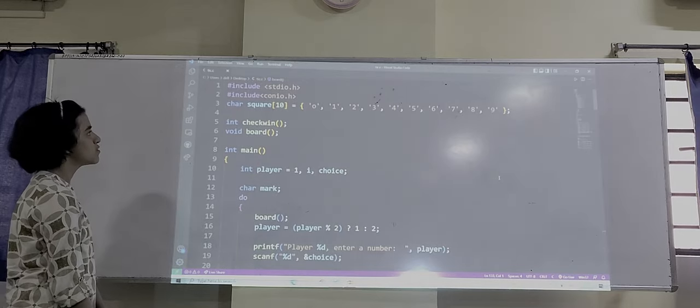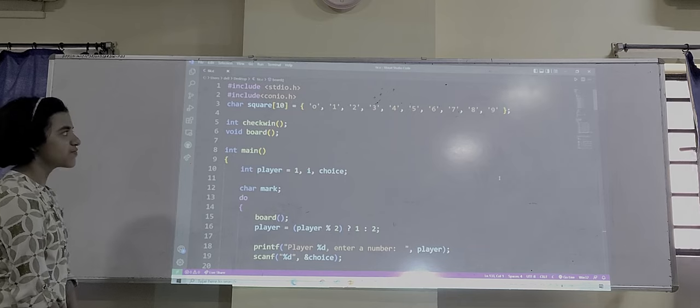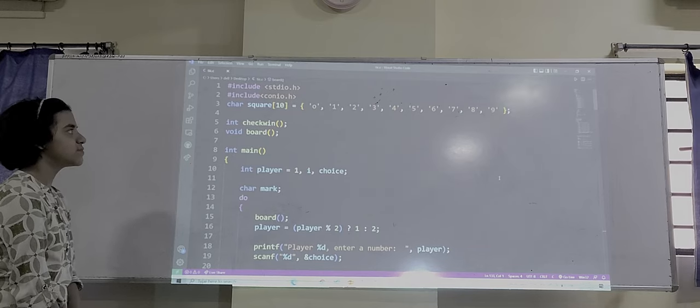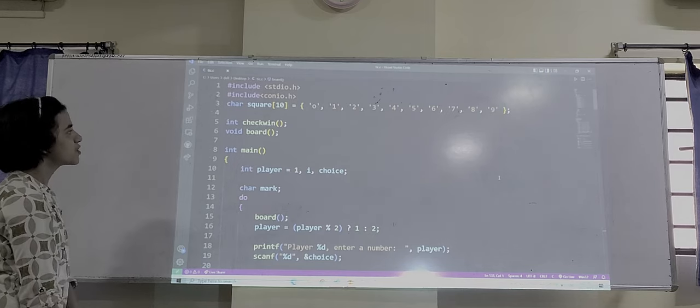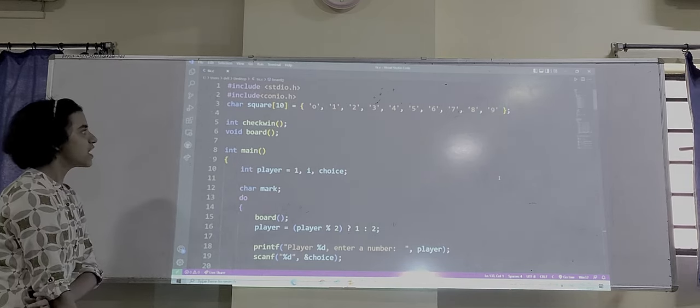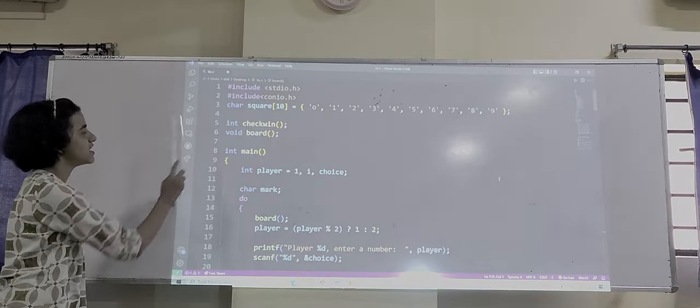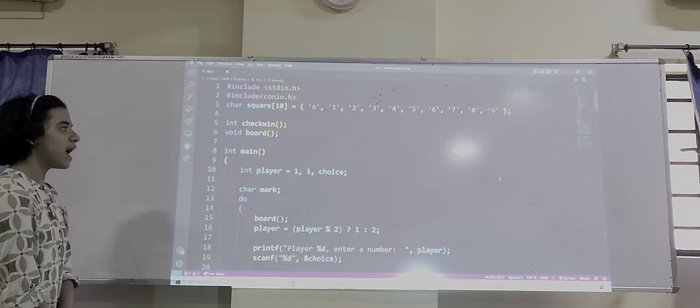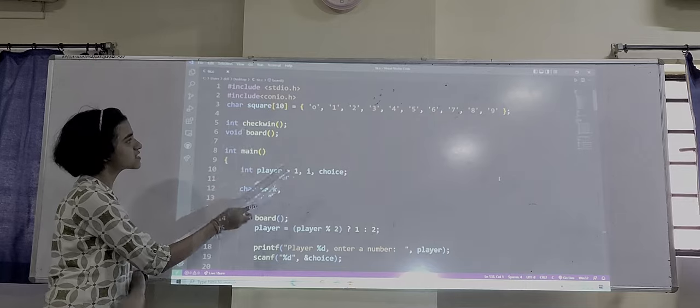First we have included the stdio.h file, a header file. Standard input output header file. After that, we have taken the header file conio.h. Then, char square, taking the array. We have taken the array function square where the type of the array is character. Under this square type array, their size is 10.